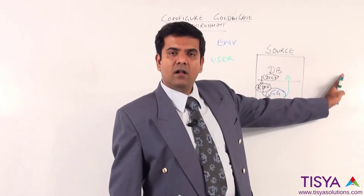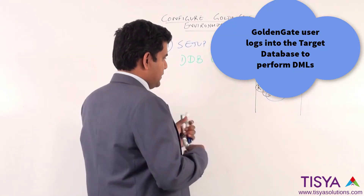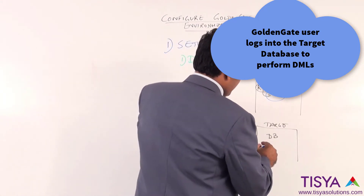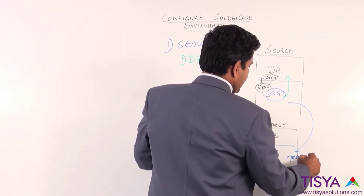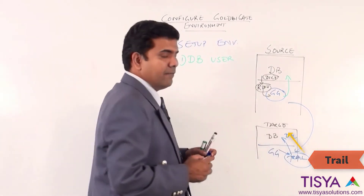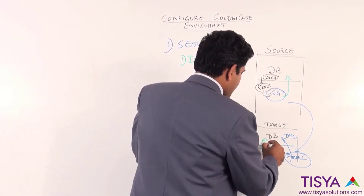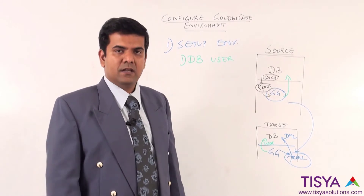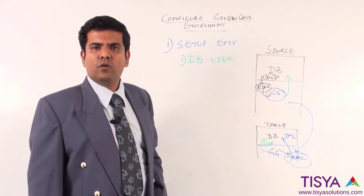Similarly, on the target side, GoldenGate will have to go and perform DML in the target. Assuming we have a target DB where GoldenGate is also installed, the source trail would come into the target. GoldenGate has to read through the trail and perform DML into the target database, so there is a user who would have the privileges to perform DML. The first thing we need to do is ensure we create the database user on both sides.